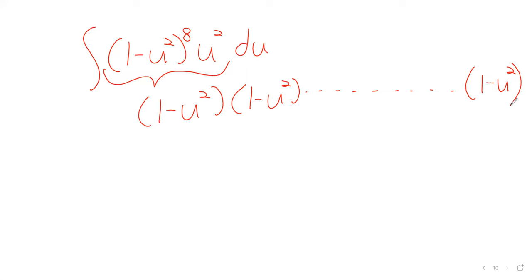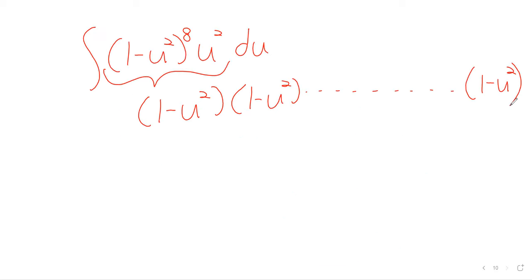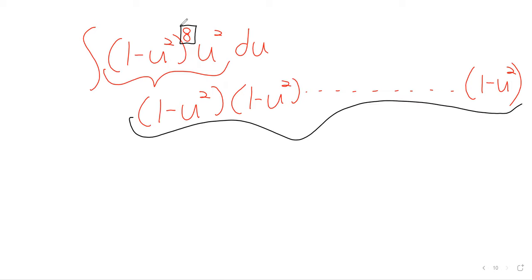The bigger the odd power, the bigger this polynomial expansion ends up being, and the more work it is to actually foil it out and get to the polynomial. I would say it works great for third powers, fifth powers are okay, seventh powers are kind of pushing it, and by the ninth power I'd probably just use a machine. But this does work fine with low powers.